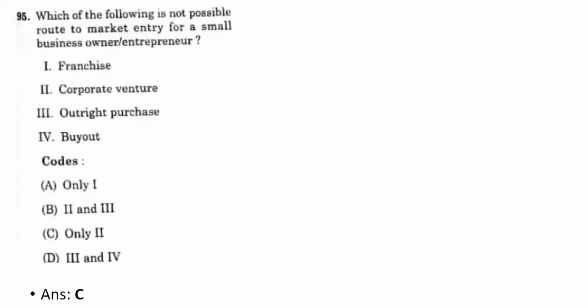Ninety-fifth question: which of the following is not a possible route to market entry for a small business owner or entrepreneur? It is C — corporate venture. Corporate venture is not a possible route to market entry for small business owners or entrepreneurs.